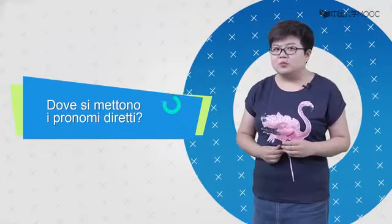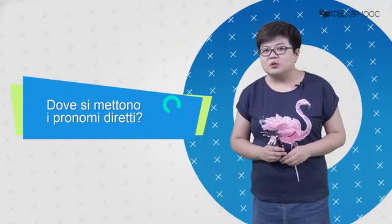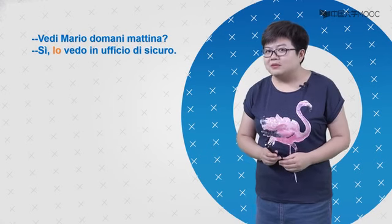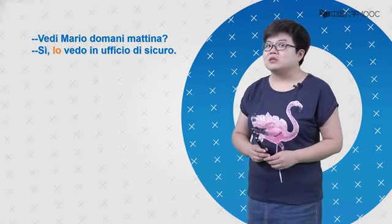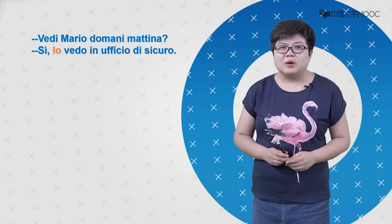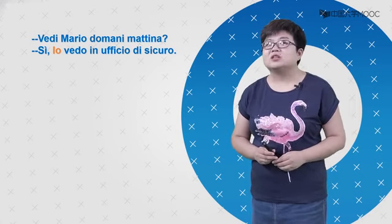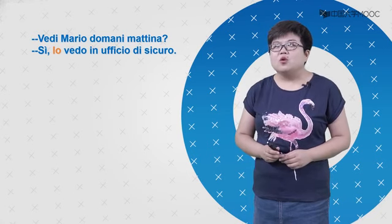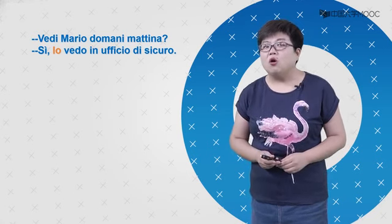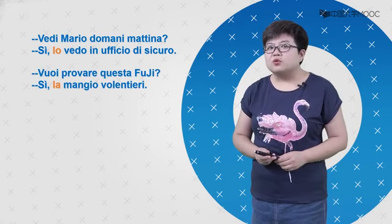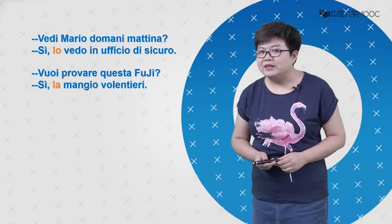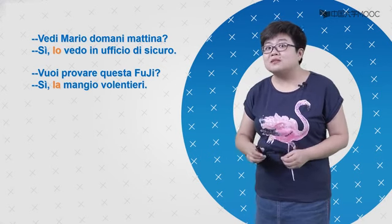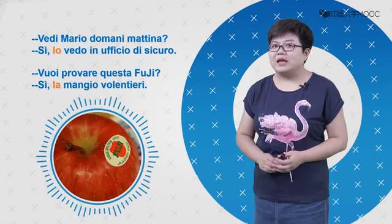Dove si mettono i pronomi diretti? 那么，pronomi diretti，直接宾语代词，我们要把它放在什么位置呢？Vedi Mario domani mattina? Sì, lo vedo in ufficio di sicuro. 说明天早上你能见Mario吗？Lo代替的是Mario。通常情况下，我们会把直接宾语代词放在动词的前面。Lo vedo. Vuoi provare questa Fuji? Sì, la mangio volentieri. La代替的是questa Fuji——富士苹果。